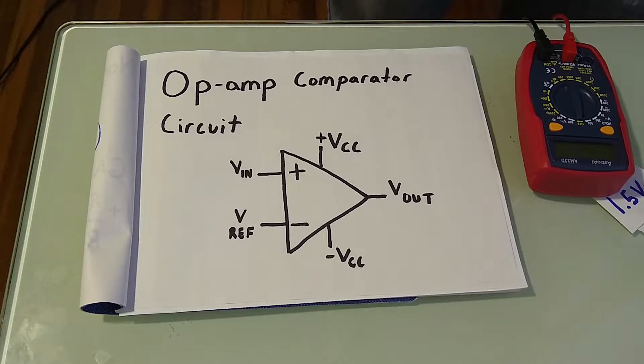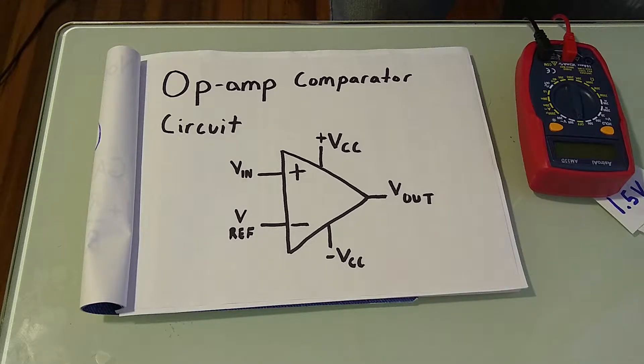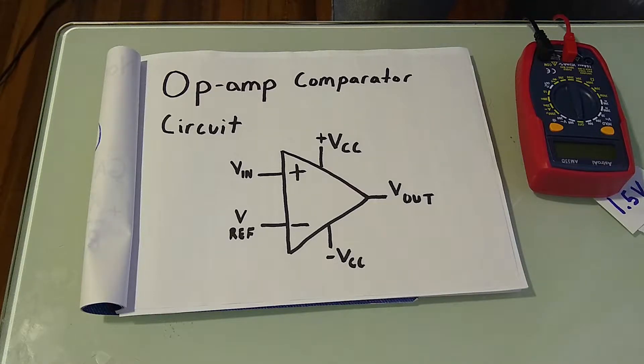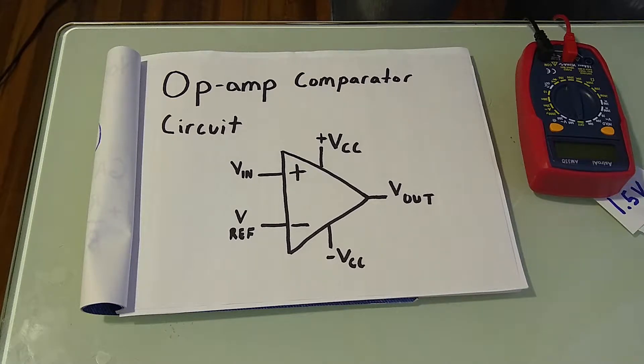Because open loop gain is exceedingly high, the output from the comparator swings fully to its negative supply or its positive supply voltage, depending on where the input voltage is in relation to its preset reference voltage. The comparator essentially converts analog to digital signals.